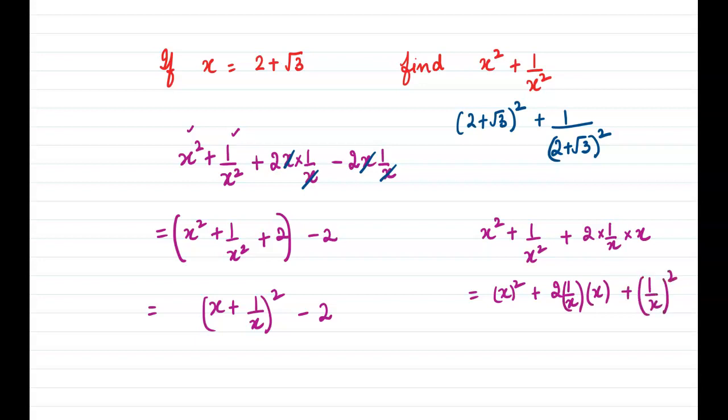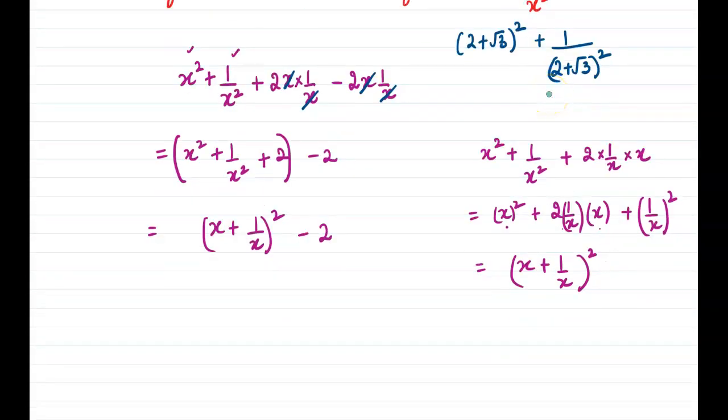Plus b² so this is a² + 2ab + b², so this is same as (x + 1/x)². So that means we now need to figure out the value—we know x, but we need to figure out the value of 1/x.